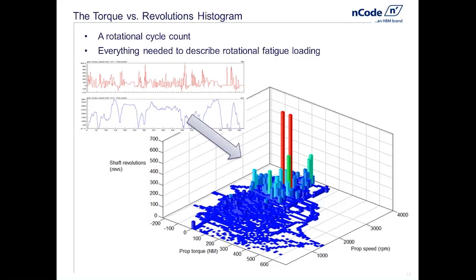The torque time series data will tell us the magnitude of the fatigue cycles we're seeing once per revolution. The speed will be critical because it tells us per unit of time how many of these cycles are happening — and speed over time equals revolutions. So from torque versus time and speed versus time, we can answer the two critical questions for fatigue: how many cycles happened, and how big were they? That's the distribution of fatigue cycles shown in this plot.